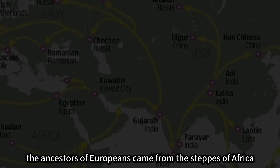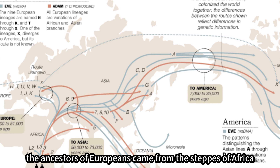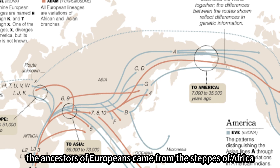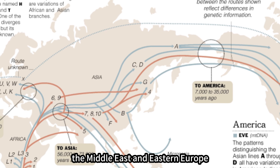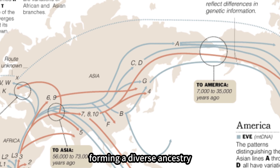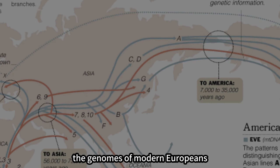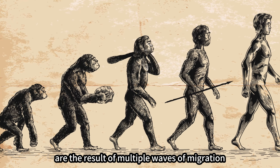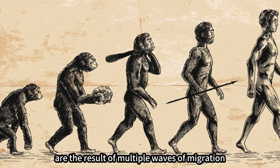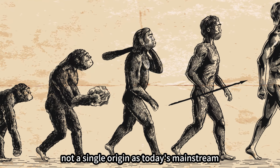In short, the ancestors of Europeans came from Africa, the Middle East, and Eastern Europe, forming a diverse ancestry. The genomes of modern Europeans are the result of multiple waves of migration, not a single origin.